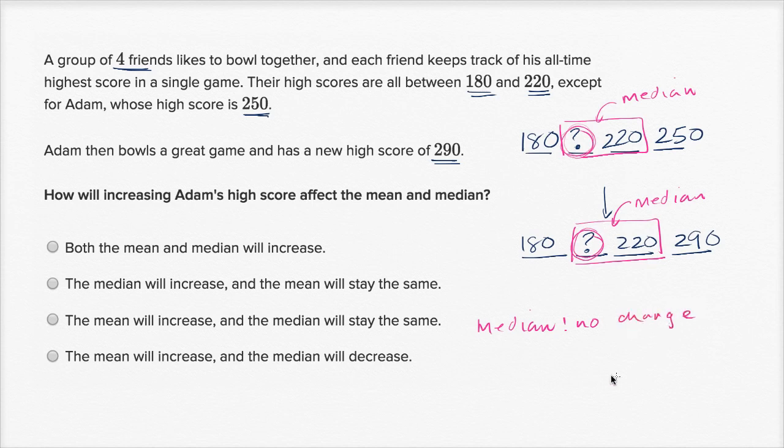So let's think about the mean now. Well, the mean, you take the sum of all these numbers and then you divide by four. And then you take the sum of all these numbers and divide by four. So which sum is going to be higher? Well, the first three numbers are the same, but in the second list, you have a higher number. 290 is higher than 250.